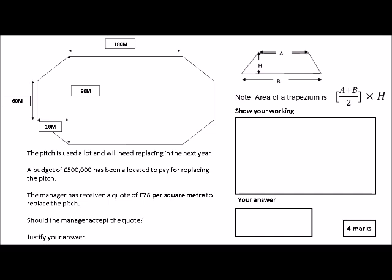So you add the A and the B together: 60 plus 90, you divide it by 2, and then you times it by its height and you'll get your answer. Now as you can see, this is a four mark question.